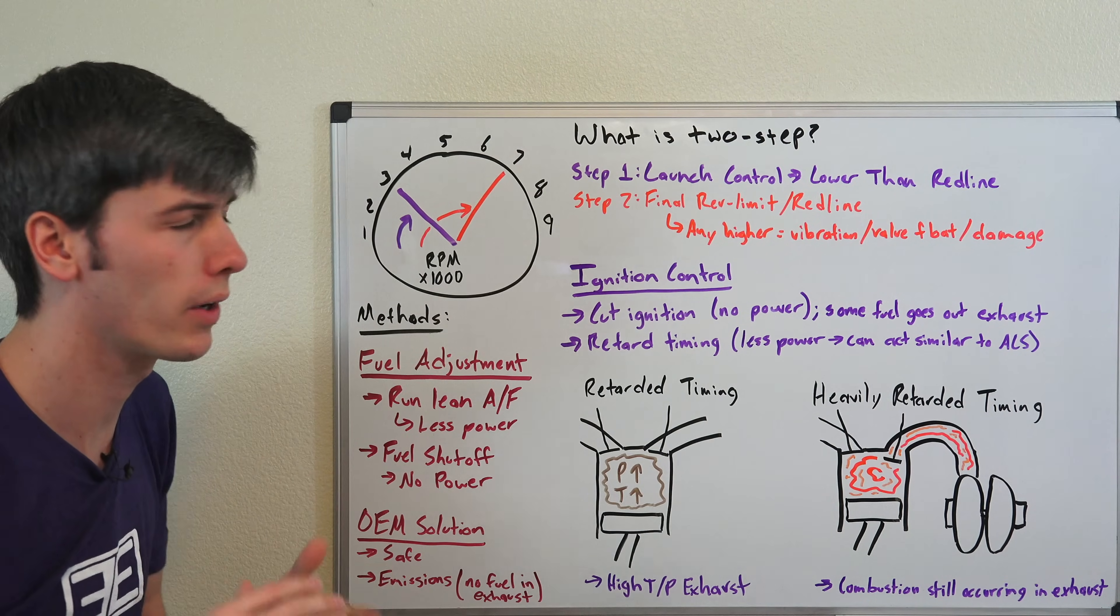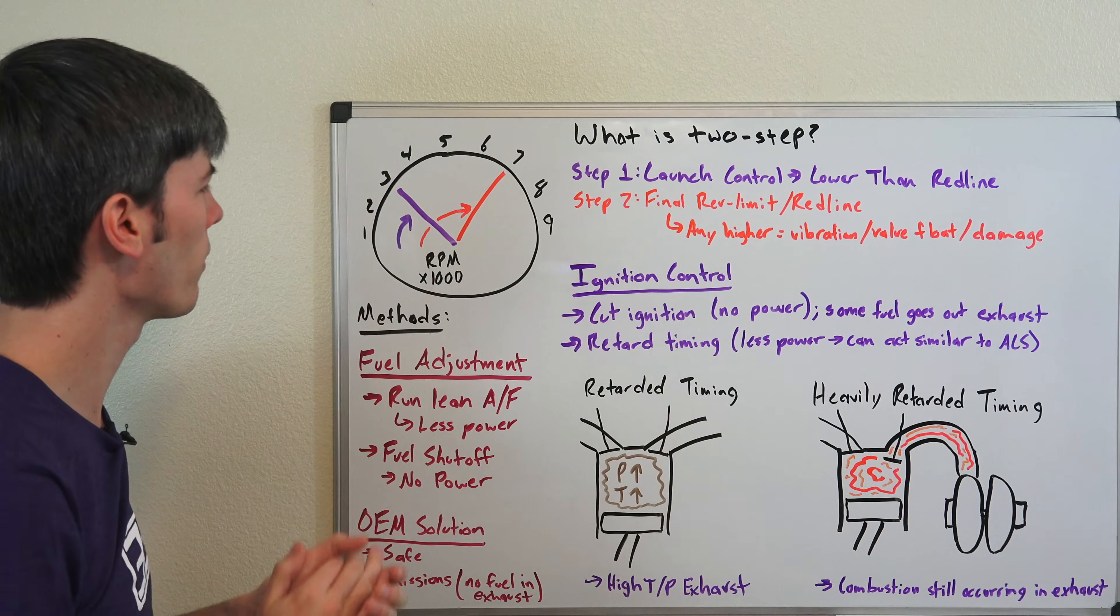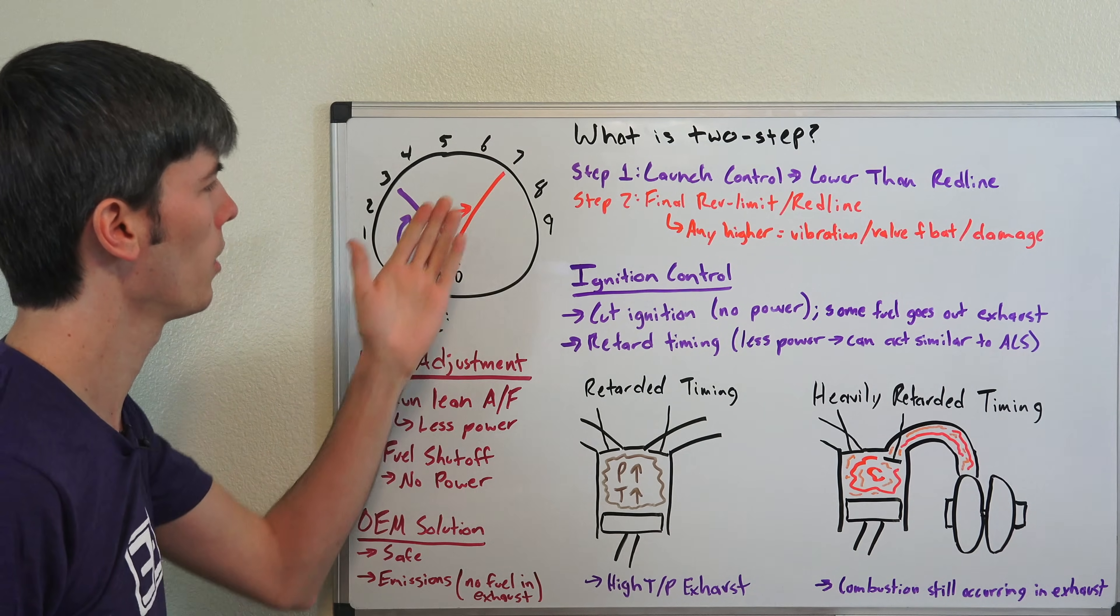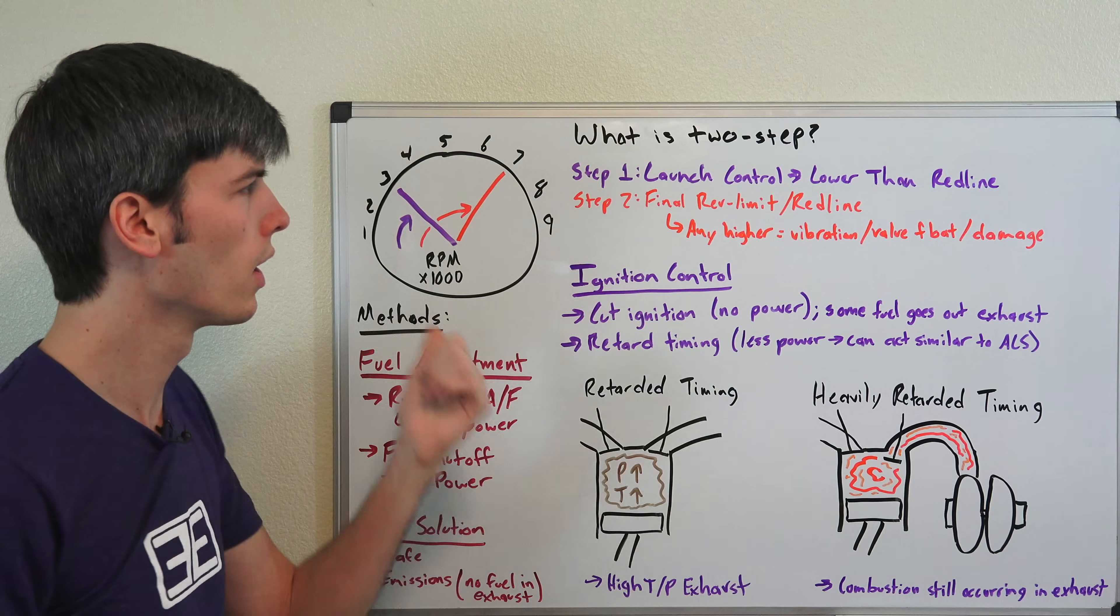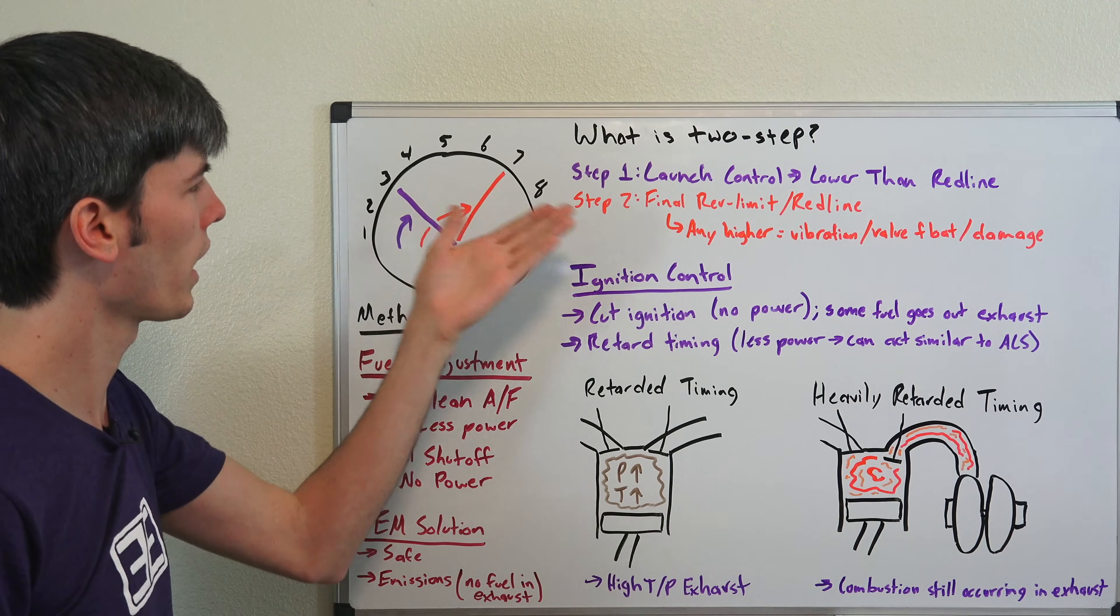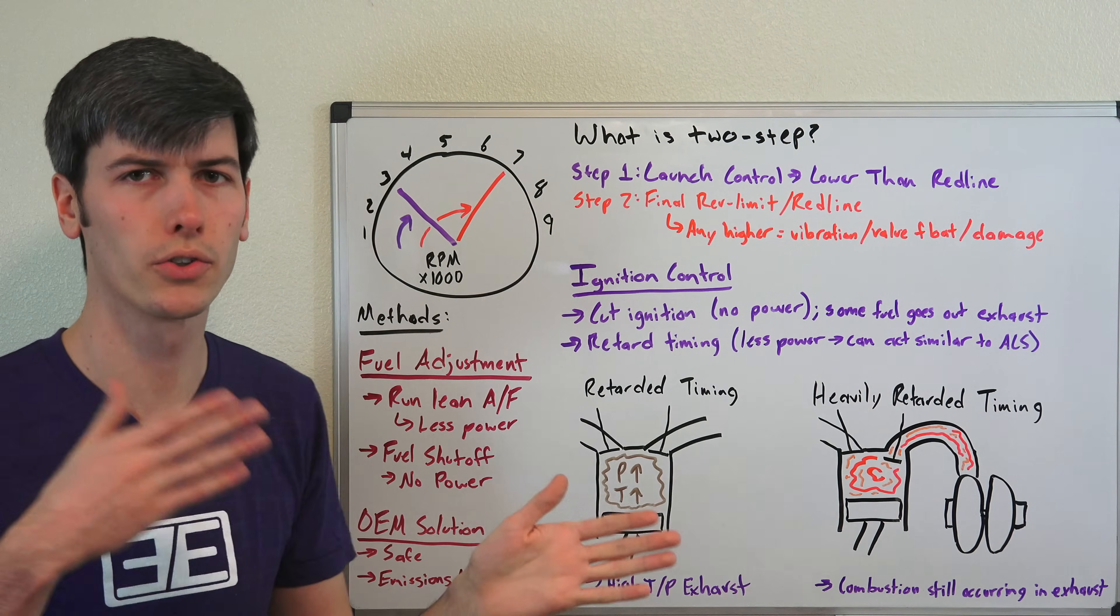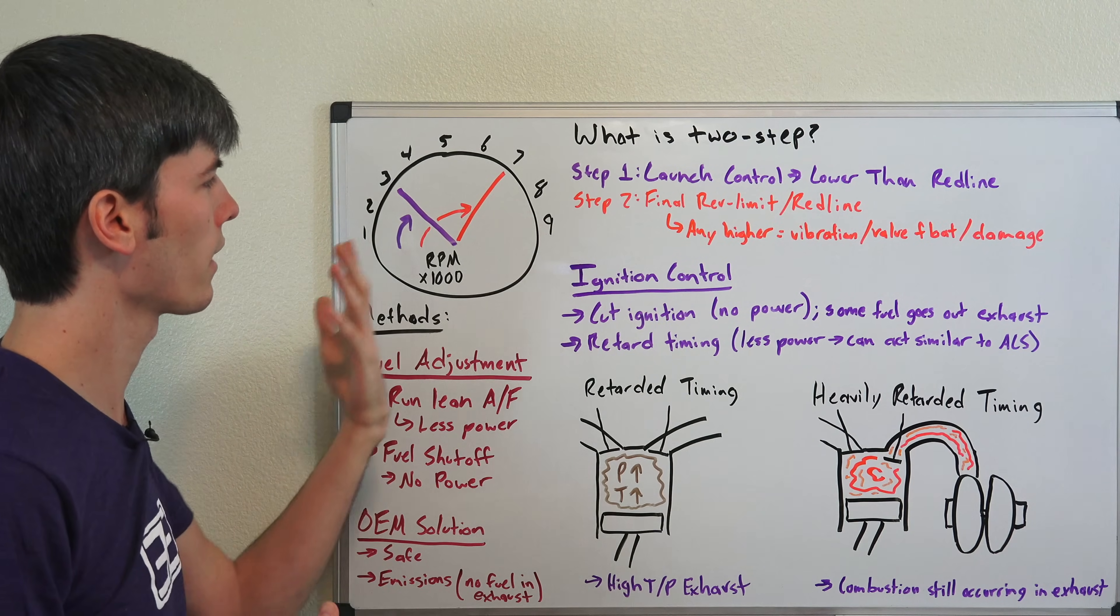Now a two-step rev limiter very simply is just having two different stages of having a rev limiter. So you're going to have one at a lower rpm and one at a higher rpm. The lower one is typically going to be used for launch control, so when the car is stationary. And then you're going to have a second final rev limiter which is going to be at your red line or just slightly past your red line.